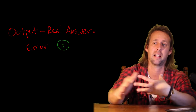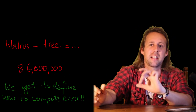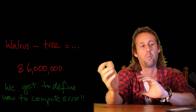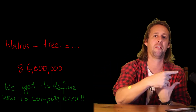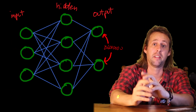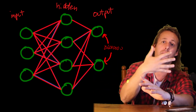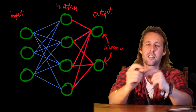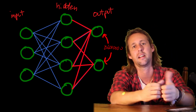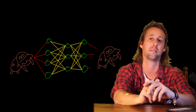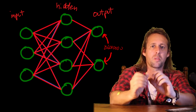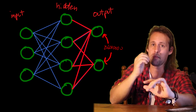We give the output layer some error value. Based on the values of those output neurons we compute an error value that we're trying to minimize. If the input is a picture of a walrus and our neural network says it's a tree, we might say the neural network has done hopelessly badly and the error value is 86 million. The next step is to push that error value backwards through the network and slightly change all of the weights between the neurons, so that the next time we show it a picture of a walrus it's closer to the real answer.